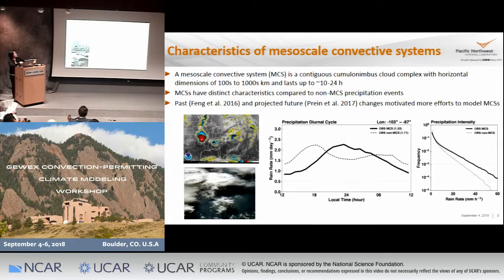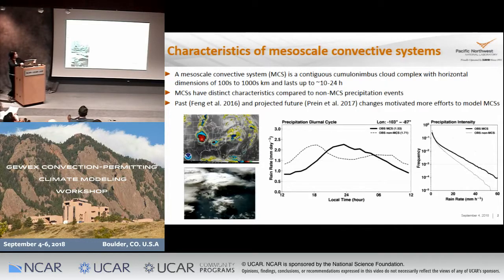Some past work — for example, the work that we published in 2016 — shows that MCSs in the past 35 years have already been changing. In fact, we have been getting more, and they have been producing more precipitation and lasting longer. And then work by Andrea looked at projected future changes. These two studies essentially suggest that we really need to look at MCSs more, because they have been changing in the past and will be changing in the future.